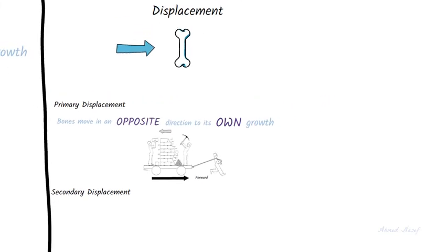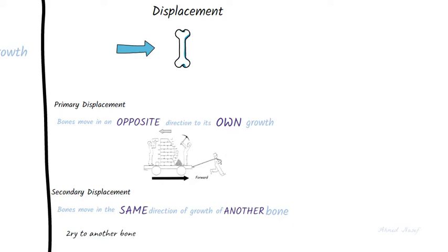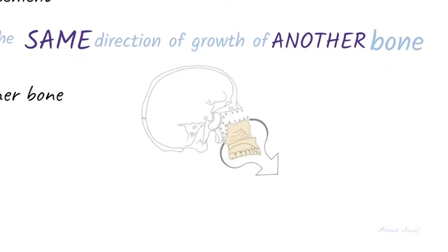Secondary displacement is the movement of the bone in the same direction of growth of another adjacent or distant bone. It is a movement which is secondary to another bone and not related to its own growth. Basically it's the movement of the bone in relation to enlargement of other bones.